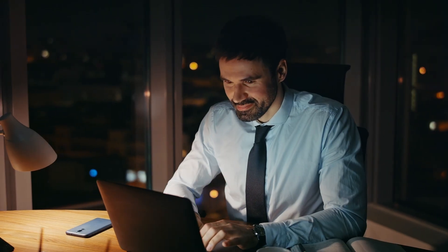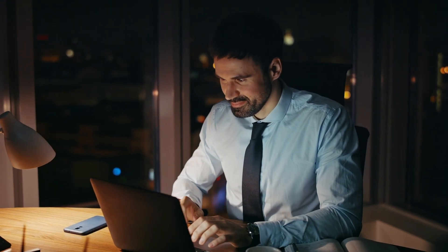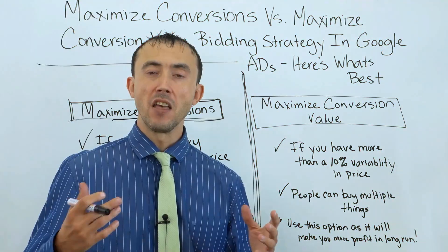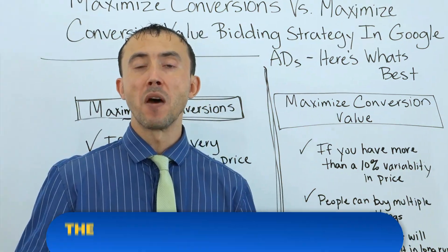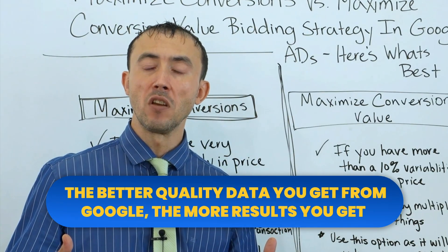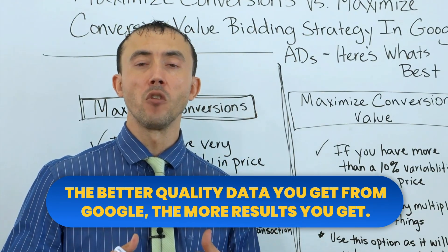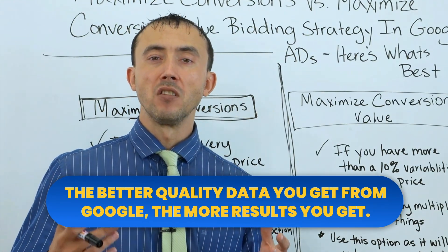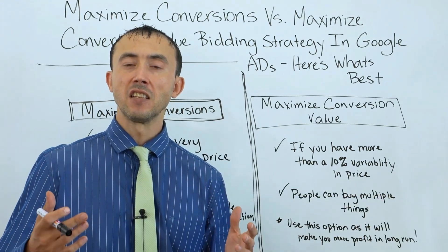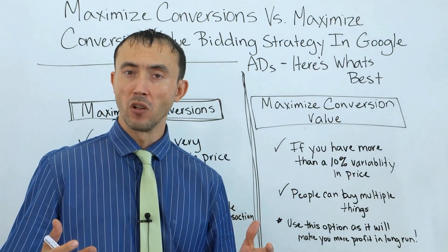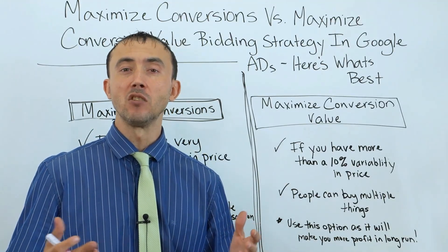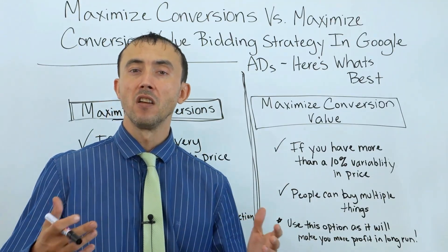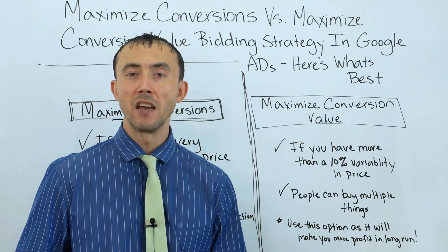The machine learning algorithms that Google has can guide your ads in a better direction on an ongoing basis. The better quality data you give Google, the more your results are going to improve over time. The data is half of your results in your Google Ads account, at least over time in the long run.